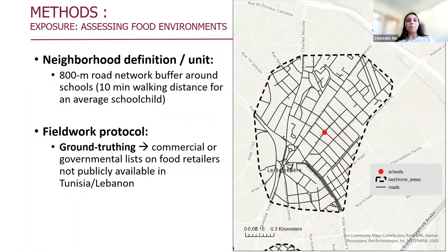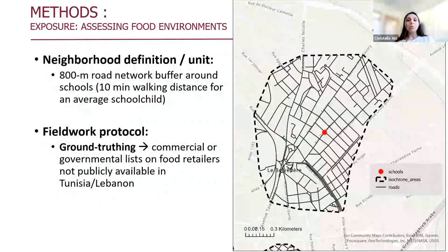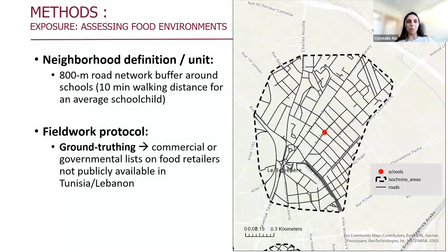For the protocol, we needed to map the retailers and advertisements within the buffer. We conducted a ground truthing, meaning an in-person mapping with direct observation and measurements, where data collectors walked on the streets and collected the data directly. We conducted ground truthing because there are no commercial or governmental lists of food retailers publicly available in Tunisia and Lebanon.